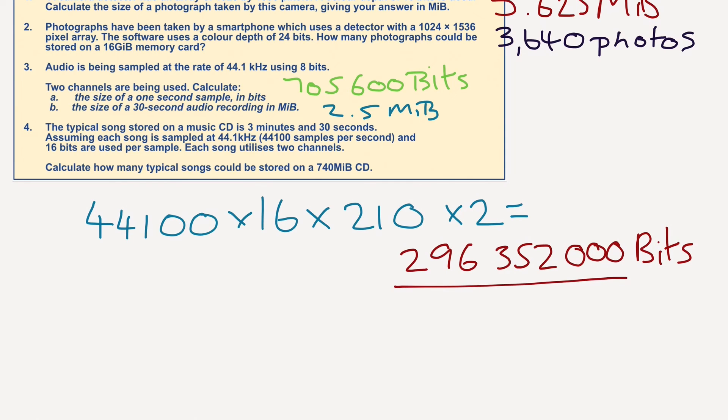So what are we going to do with that? We're going to turn it into bytes first, and then megabytes, the same as we did with the last one. Let's take this number and divide it by 8 to get 37,044,000 bytes. But we're going to turn that into megabytes. Divided by 1024, and then divided by 1024, we should get 35.33 megabytes.